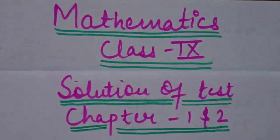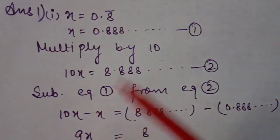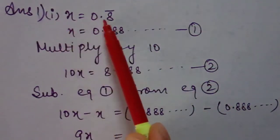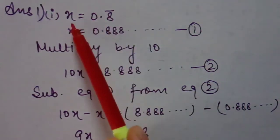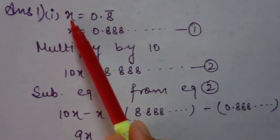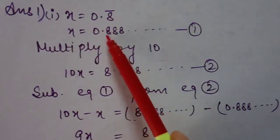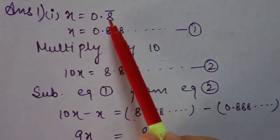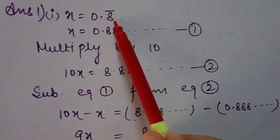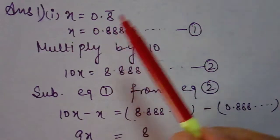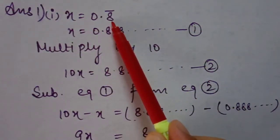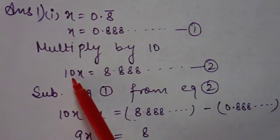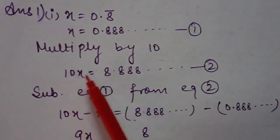Your first question was: express in p/q form. The first part is 0.8 bar. We put this equation equal to x, so x equals 0.8 bar, meaning 8 is repeating again and again. The first rule is: only the bar number should be present on the right side of the decimal. How many numbers are under the bar? One. So we multiply with 10.